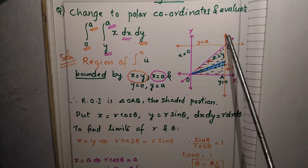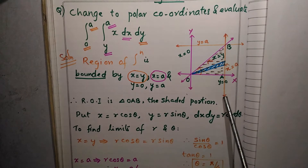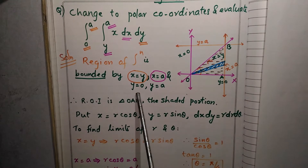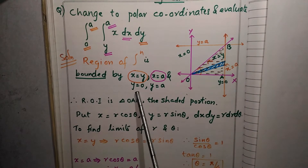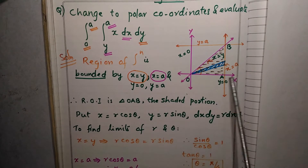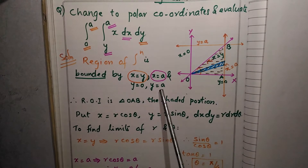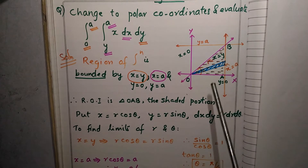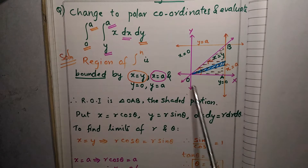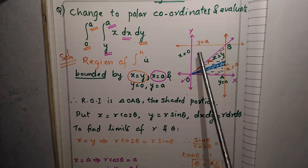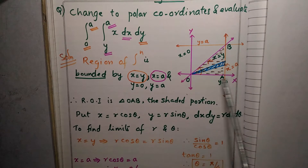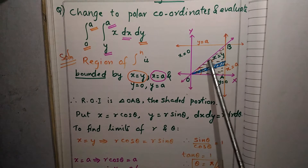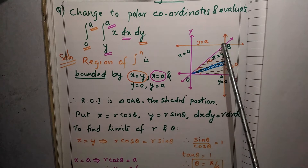X equal to A means a straight line parallel to the Y axis — this orange line is X equal to A. Y equal to 0 means the X axis, and Y equal to A means the line parallel to the X axis. The region common to all these lines is the bounded triangular region — the region of integration is this triangle OAB.